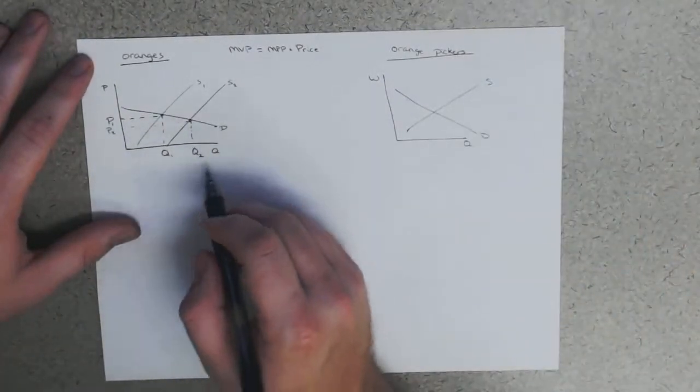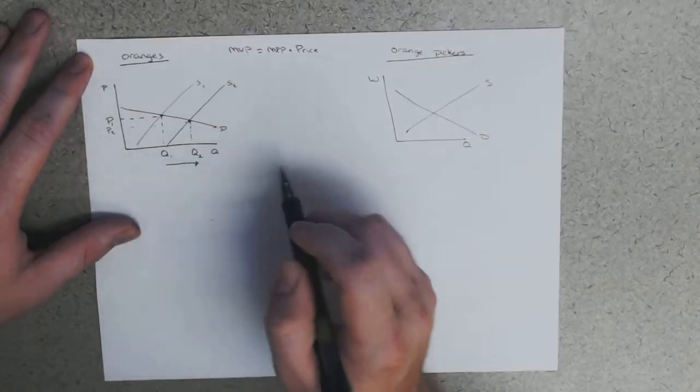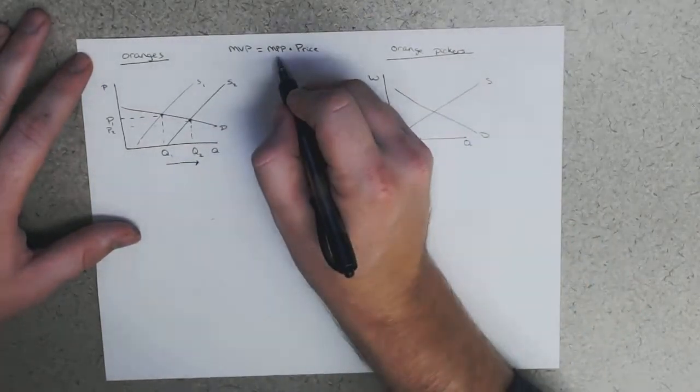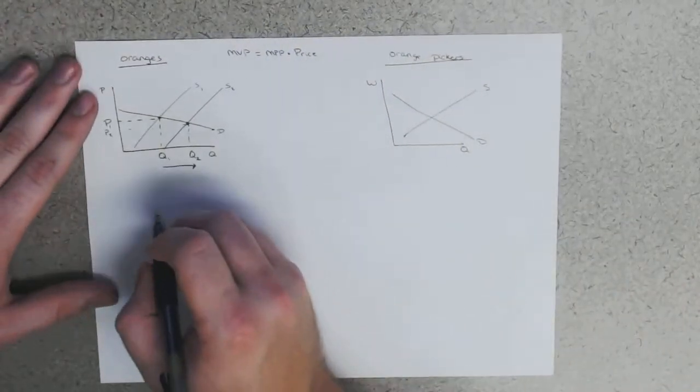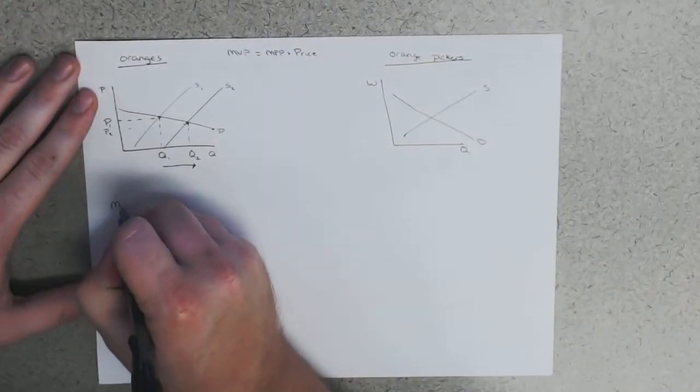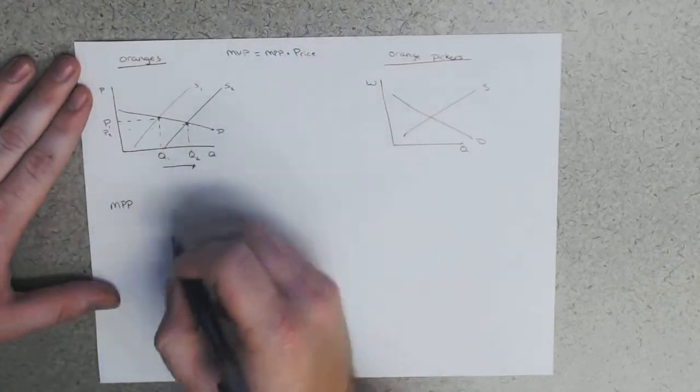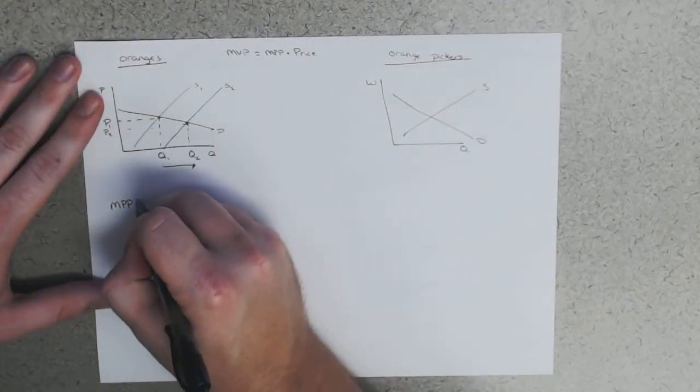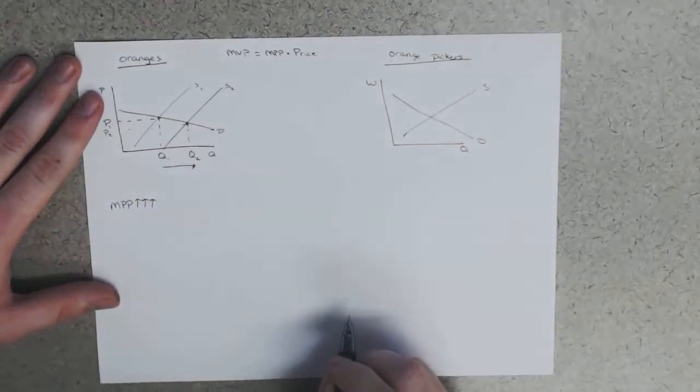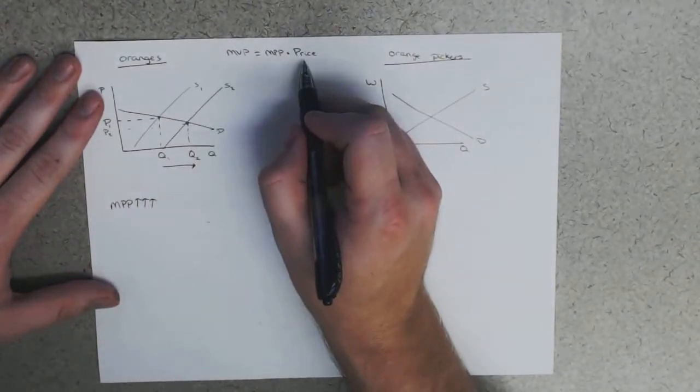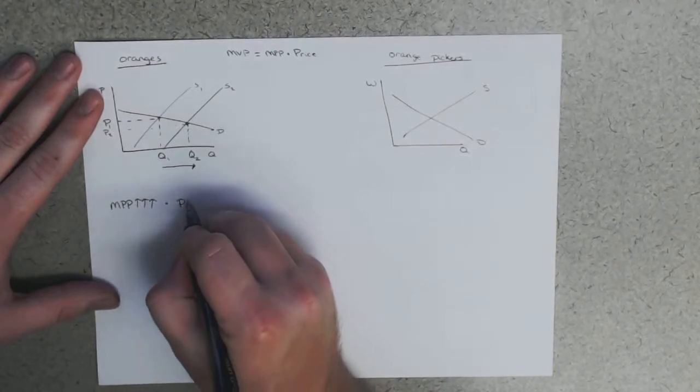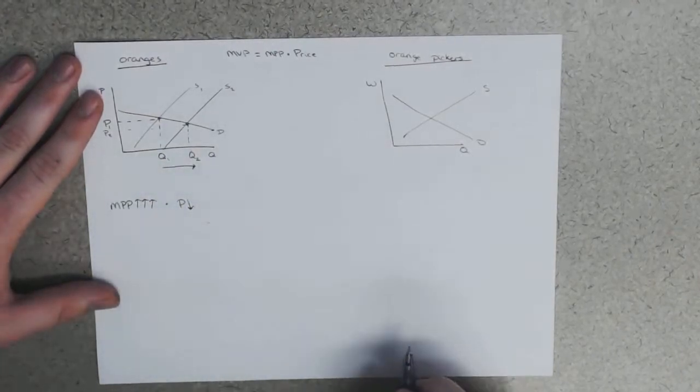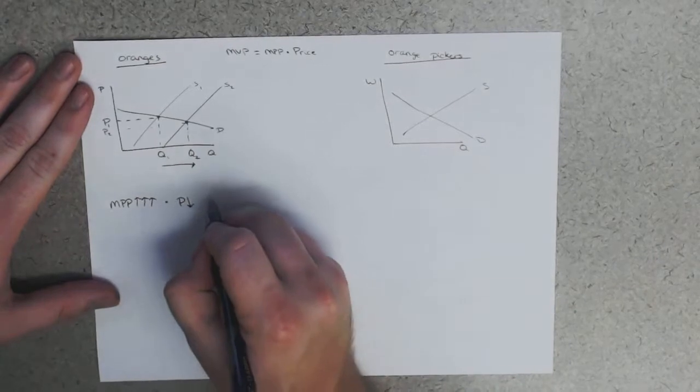Supply increases. As a result, price decreases and quantity increases. So no mystery there. What we've got is a really big increase in quantity. MPP is going to increase by a lot. So here's my very scientific notation: MPP as a result of this technological change is increasing by a lot.